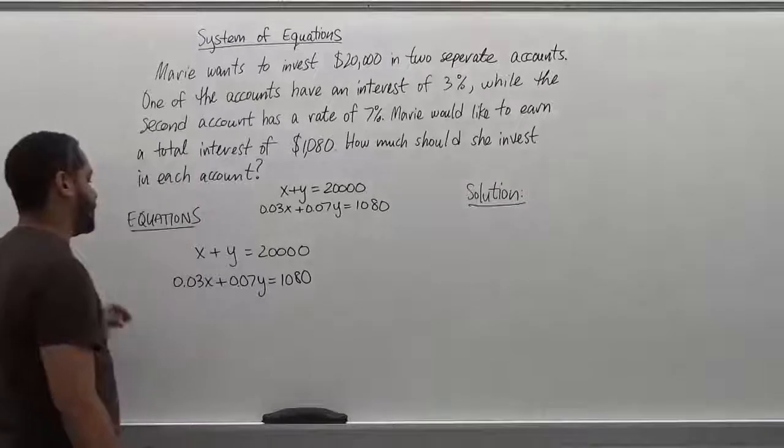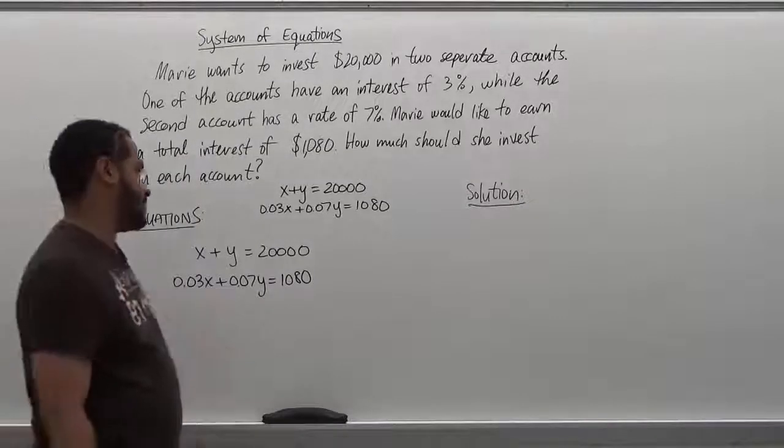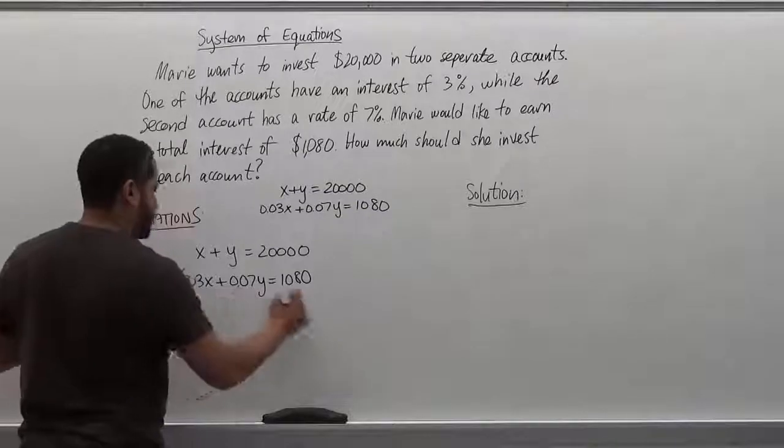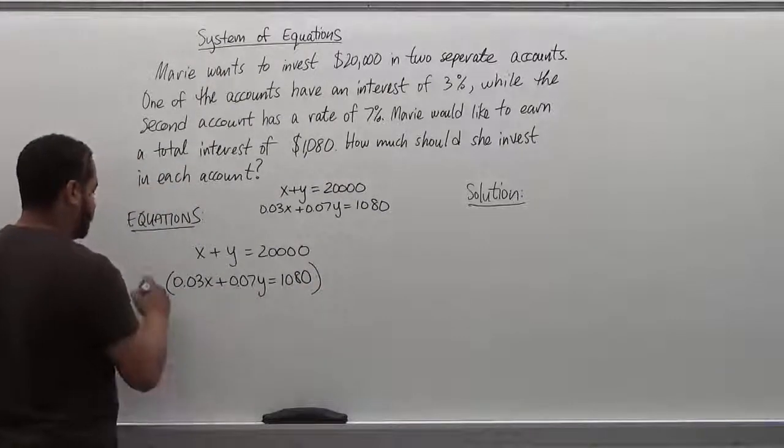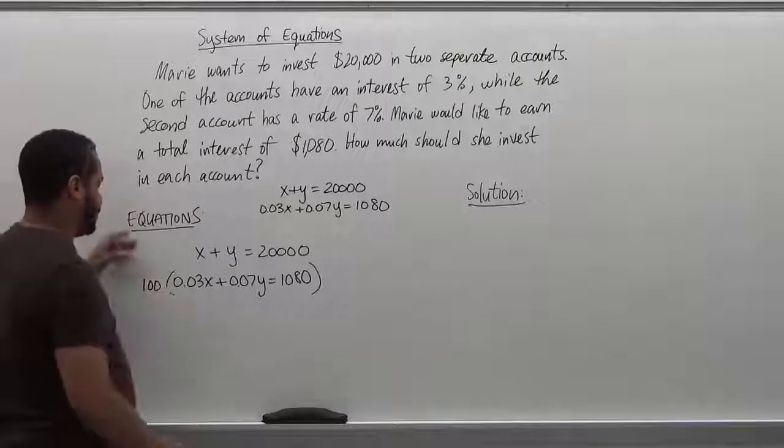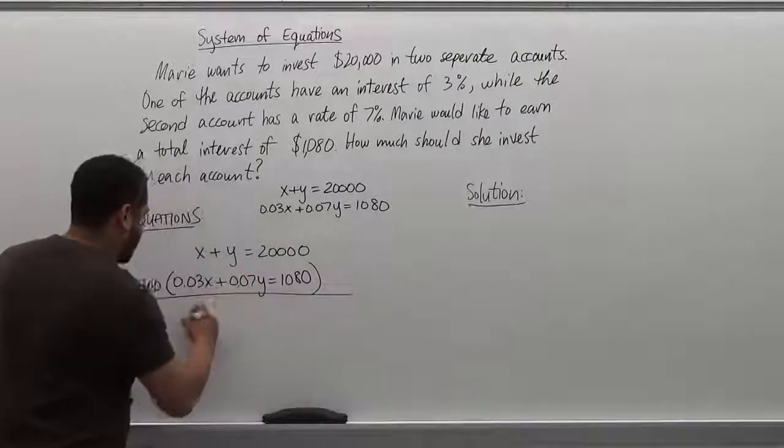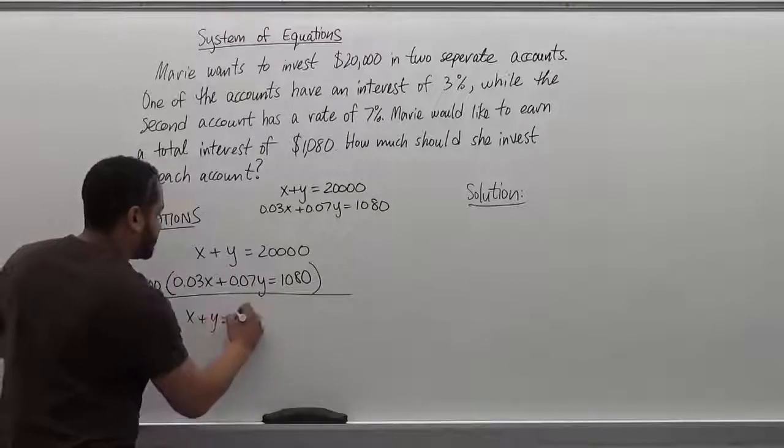The first thing we want to do here is get rid of the decimal terms. So what we do to get rid of the decimals is multiply everything by the number that gets rid of the decimals, which will be 100. We're going to leave the top the same just so that we can get rid of these decimals first. So the top stays the same, x plus y equals $20,000.